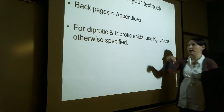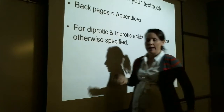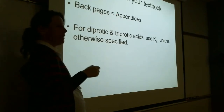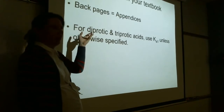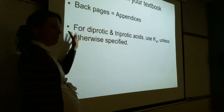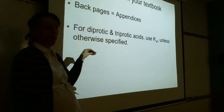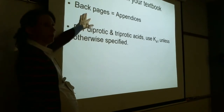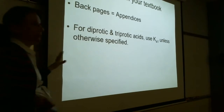In your textbook, if you ever need a Ka value — like when you're doing your homework — you can just search it on the internet. But at the back of your textbook in the appendices, there's a table called dissociation constants for weak acids, beginning on around page A8 or A10. If you have a question where you need a Ka value and it isn't given in the problem, you can look it up. If you're doing a diprotic acid, just use the first Ka unless the problem specifies otherwise.